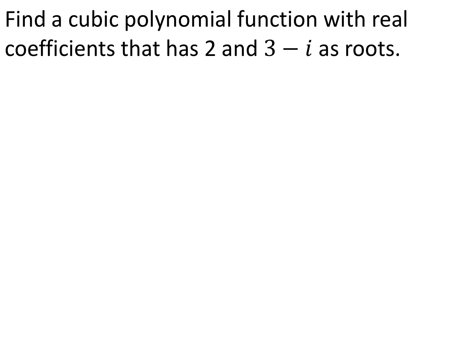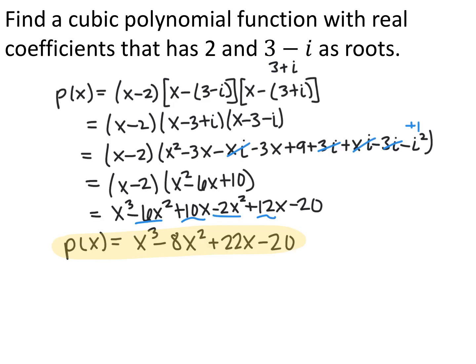For the last one, I want a cubic polynomial function with real coefficients that has 2 and 3 minus i as roots. Again, the 2-for-1 deal: if 3 minus i is a zero, then 3 plus i must also be a zero. I set it up the same way: x minus 2 for the zero of 2 with multiplicity 1, then x minus the quantity 3 minus i and x minus the quantity 3 plus i. I FOIL the complex part first — all the i's go away — giving x squared minus 6x plus 10. Then I multiply that by x minus 2, and the cubic polynomial is p of x equals x cubed minus 8x squared plus 22x minus 20.